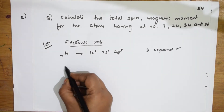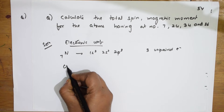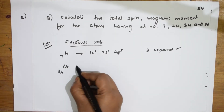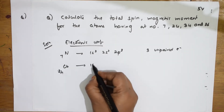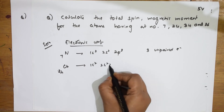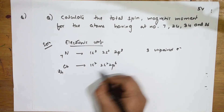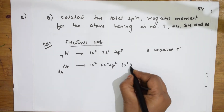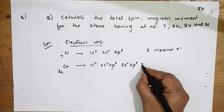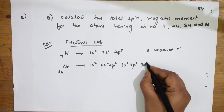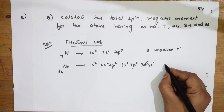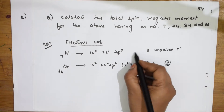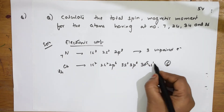Next, for atomic number 24 — chromium — the configuration is 1s², 2s², 2p⁶ (10 electrons done), then 3s², 3p⁶, then 3d⁵, 4s¹. How many unpaired electrons are here? 6 unpaired electrons.